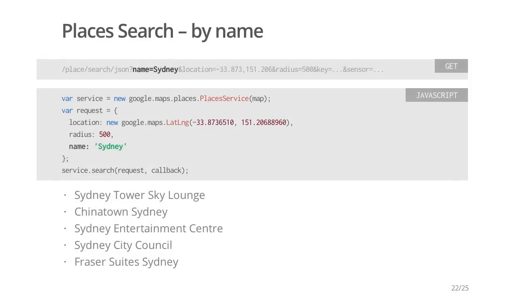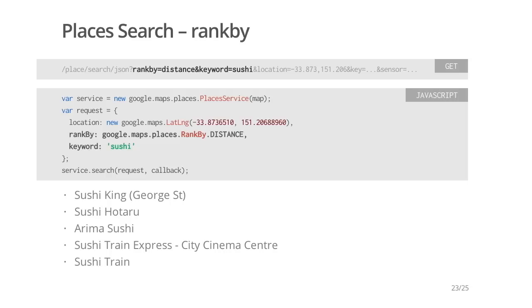Places search results can also be refined by exact matches of the name — just specify the name parameter. In the previous examples, results were ranked according to their prominence score. Alternatively, results may be ranked by distance from the center of the query — just specify the rank by parameter. When using distance ranking, you must also specify some other search criteria. In the example here, we use distance ranking and keyword filtering to find the closest sushi restaurant.